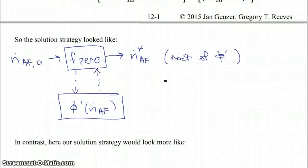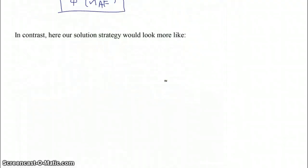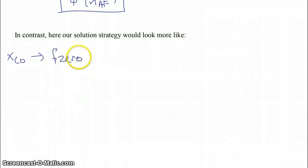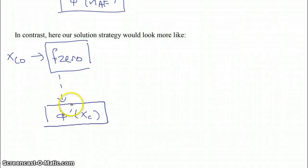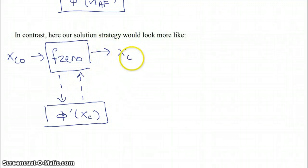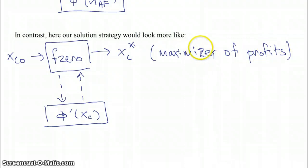In contrast, because we have to use fsolve here, our solution strategy will look more like the following. We start with an initial guess for xc which feeds into fzero. fzero calls a function that we need to write — the derivative of our profit function as a function of xc — which sends back the derivative value to fzero, which will hopefully return xc-star: the maximizer of our profits.